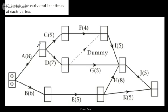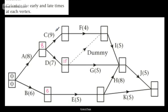We need to think about the early event times. The earliest we can get to the first event: starting at zero with only A feeding in — that's eight days. Considering the next event: B takes six days from zero, so the early event time is six. Then considering D: starting at eight, D takes seven days, so the earliest we can complete is after fifteen days. For C, dependent only on A: we can start C after eight, and C takes nine days, so that gives seventeen.